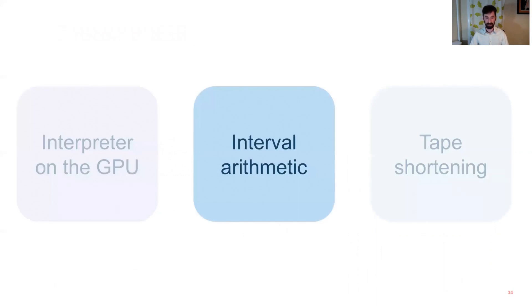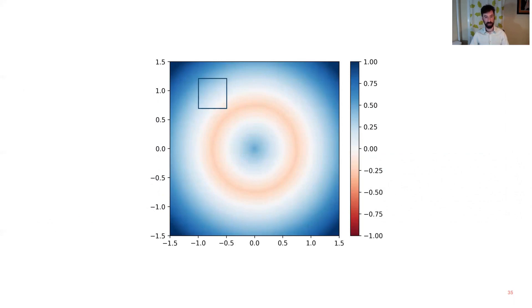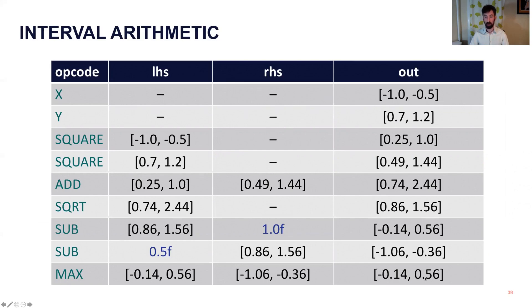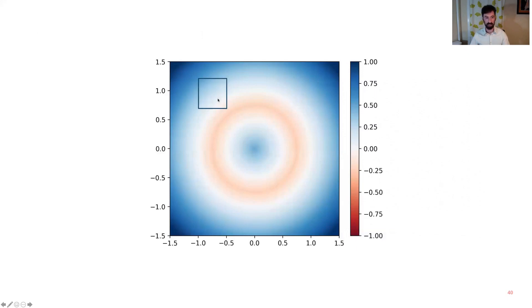The second building block is interval arithmetic. And so you might be familiar, but it's basically a way of doing math on regions instead of on individual points. So if you look at this region, you can see it has x from minus 1 to minus 0.5, y from about 0.7 to 1.2, and we can do the same tape, evaluate the same tape, but tracking the bounds of the computation instead. So if you're squaring minus 1 to minus 0.5, the output is somewhere between 0.25 and 1. So we go through and the interpreter has implementations for each of these opcodes using interval arithmetic, and it gives you out an interval bound. And the cool thing about this is that if your input point is anywhere within that input region, the output is guaranteed to be within this range.